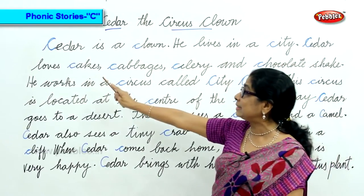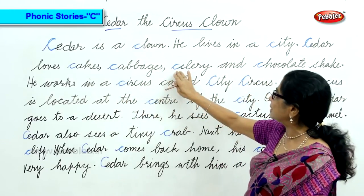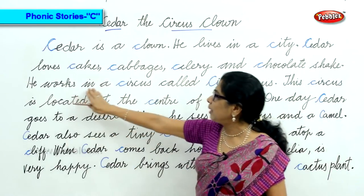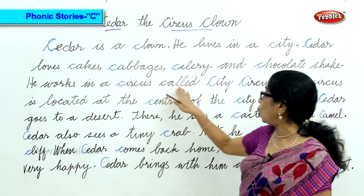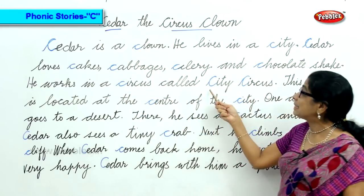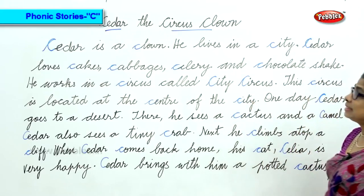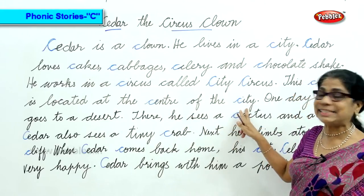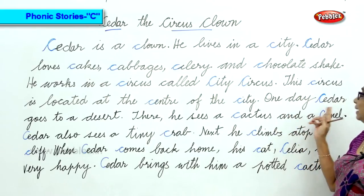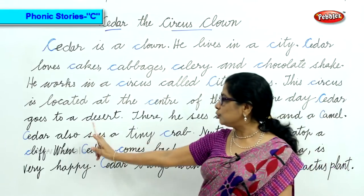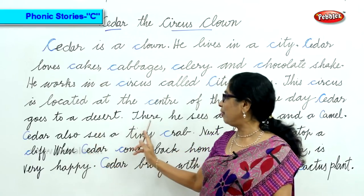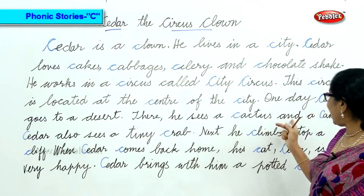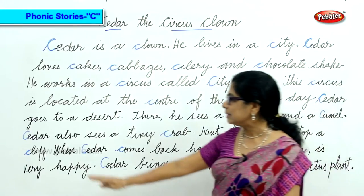Cedar the Circus Clown. Cedar is a clown. He lives in a city. Cedar loves cakes, cabbage, celery, and chocolate shake. He works in a circus called City City Circus. This circus is located at the center of the city.